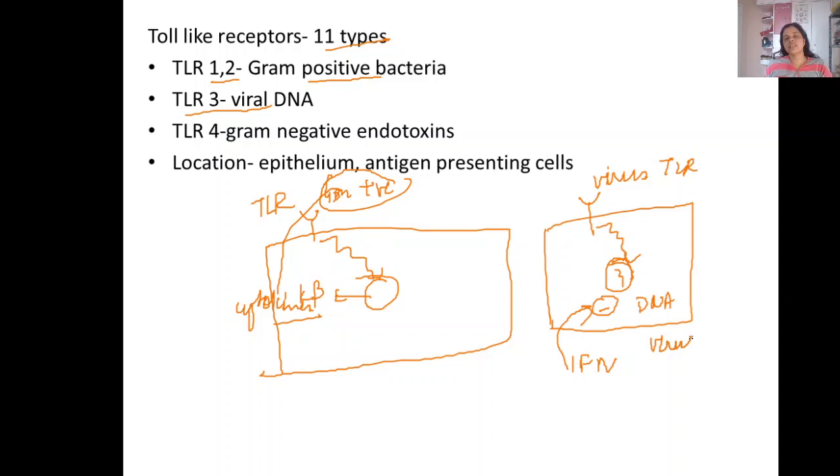These toll-like receptors are present on the epithelium and the antigen presenting cells. Antigen presenting cells include the Langerhans cells or the dendritic cells, the macrophages, and also the B cells.